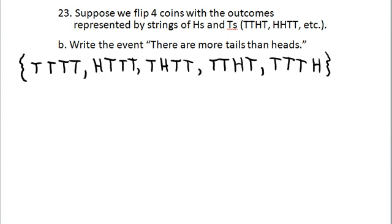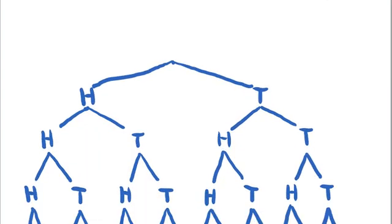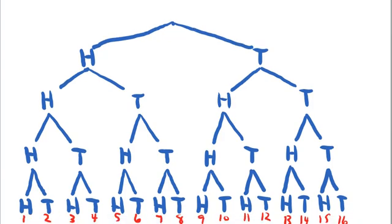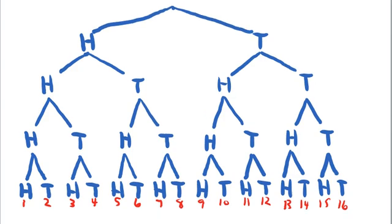You either have four tails — that's more than heads — or you have three tails. By the time you get down to two tails, you have an equal number of heads and tails. So the event consists of those five elements. If you want to verify your intuition, you can draw a tree diagram.